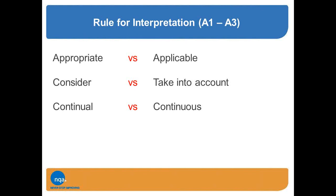Those who have come across me before will know one of my areas of mild OCD is 'continual' versus 'continuous.' The standard refers to the term 'continual.' Continual is usually used in reference to continual improvement — not continuous improvement. The analogy I use: continual is a set of stairs, and continuous is a ramp. With a set of stairs, we don't have a linear progression — we tend to move in bursts with maybe some periods of inactivity.